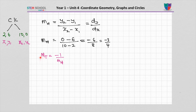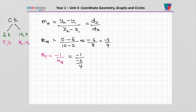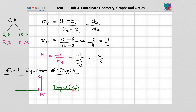Since m tangent equals minus 1 over m normal, and m normal is minus 3 over 4, m tangent equals 4 over 3. So that's the gradient of the tangent. The tangent passes through point K at 10, 0, and with one coordinate and the gradient we can find the equation of that line.